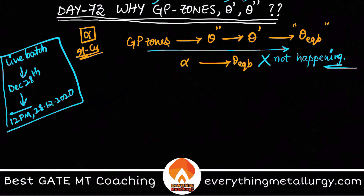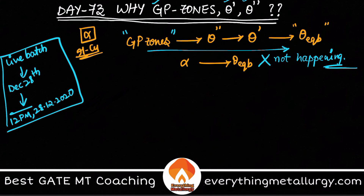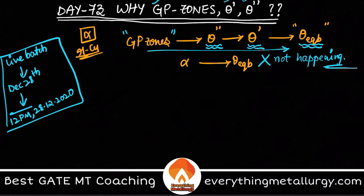GP zones are Guinier-Preston zones — they are nothing but clusters of solute atoms. All the copper atoms segregate to one region; they move and form these zones. Theta double prime and theta prime are intermediate semi-coherent precipitates. GP zones are completely coherent because no new phase is actually forming — it's just atomic migration taking place. Theta double prime and theta prime are semi-coherent, and theta equilibrium is completely incoherent.